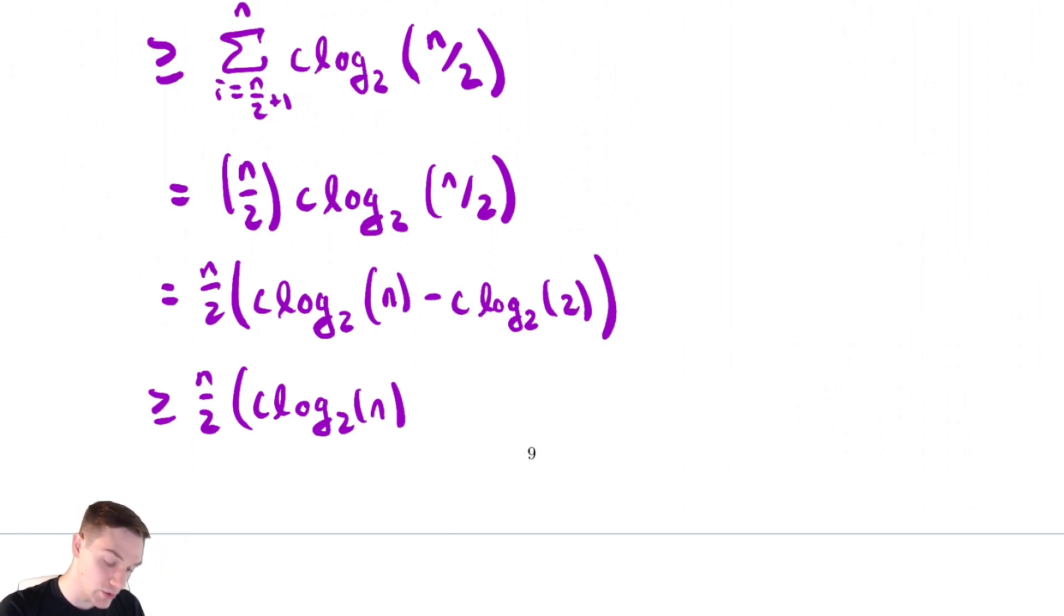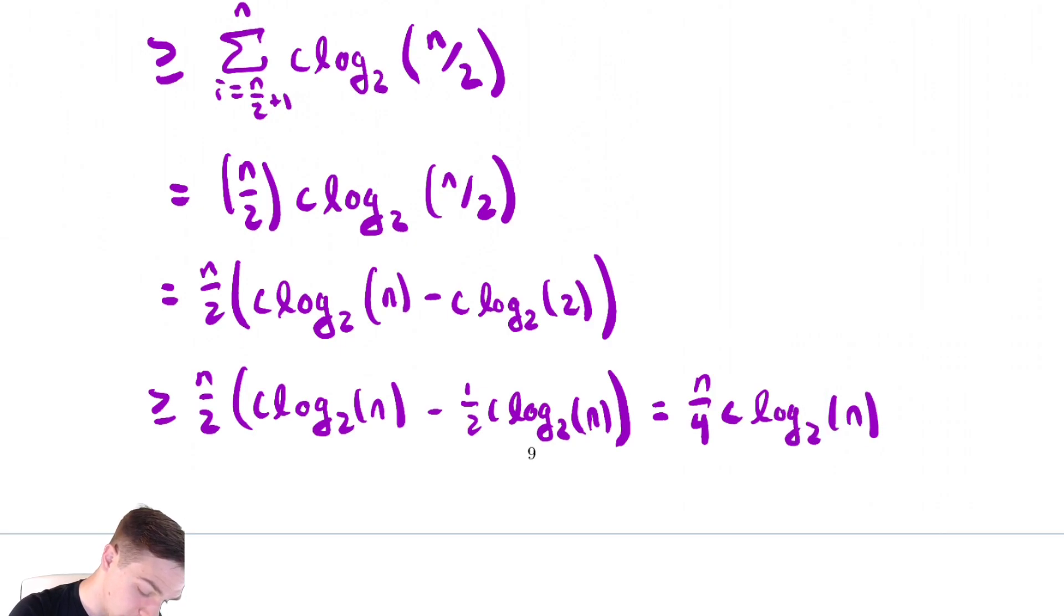So, what you can do is replace that second term with something that looks like log base 2 of n. So, log base 2 of 2, we can make smaller by making it 1 half c log base 2 of n. That number becomes arbitrarily small, so we definitely make it smaller by doing that. We could then collect together the like terms and get n over 4 times c times log base 2 of n. Where does n over 4 come from, you might ask? Well, we have c log base 2 of n minus half of that, so we get half log base 2 of n.